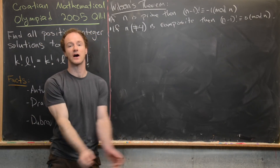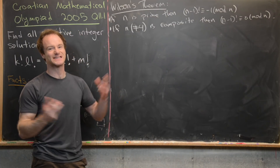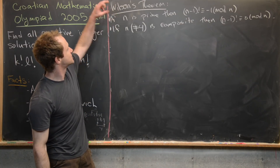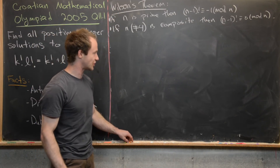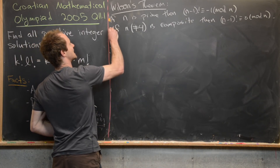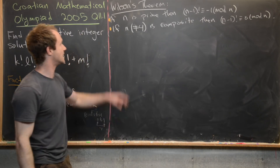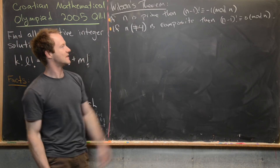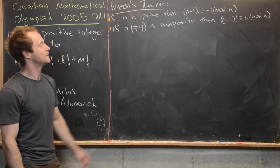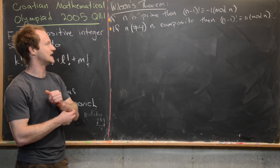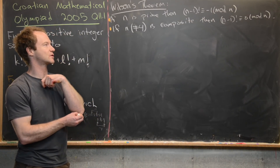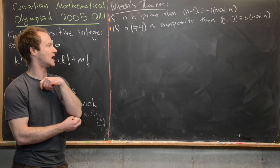Now we're going to look at a sketch of a proof of Wilson's theorem, which will help us towards our solution. The first statement is what you'd typically see in a textbook: if n is prime, then (n−1)! is congruent to −1 mod n. The second statement says that if n is composite but not equal to 4, then (n−1)! is congruent to 0 mod n. The number 4 is a special case we'll deal with later.